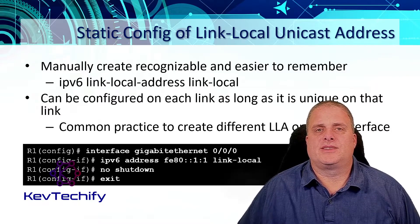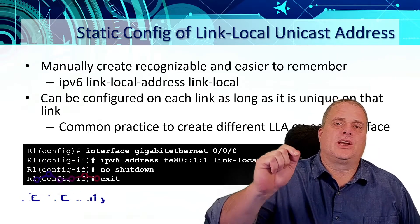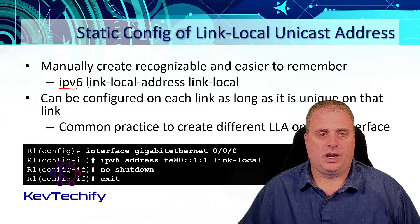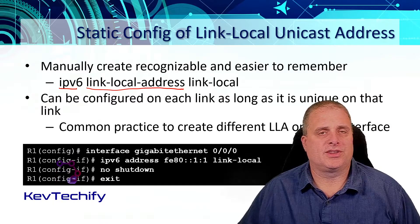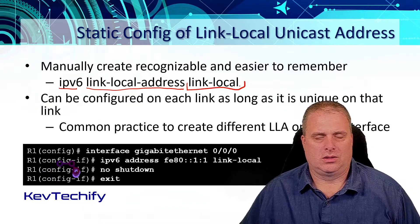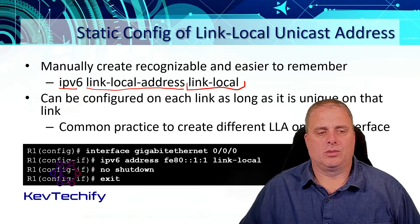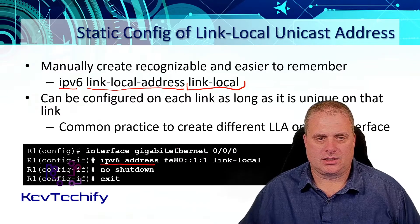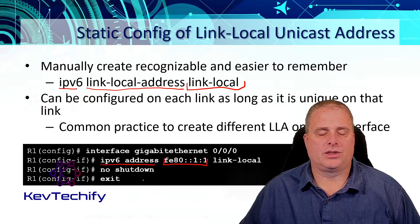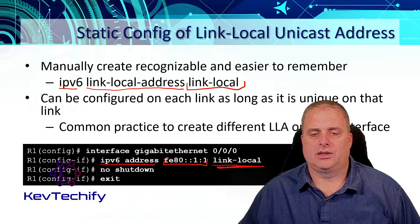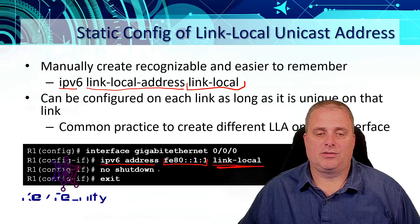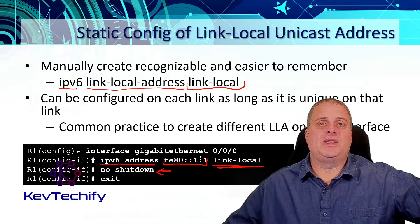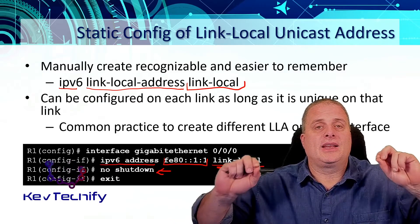When setting a static link local unicast address on a router, the command is almost identical to setting a global IPv6 address on an interface, except we specify the link local address and notice there is no slash number — no prefix at the end. All we do is add "link-local" at the end. In the example, on R1 in global configuration mode, we go into interface gig ethernet 0/0, then type "ipv6 address" followed by the address, then say "link-local". Of course, every time we do anything with an interface, we do a "no shutdown" and exit. This address — FE80::1:1 — can be set on both interfaces as long as it's unique on that link.